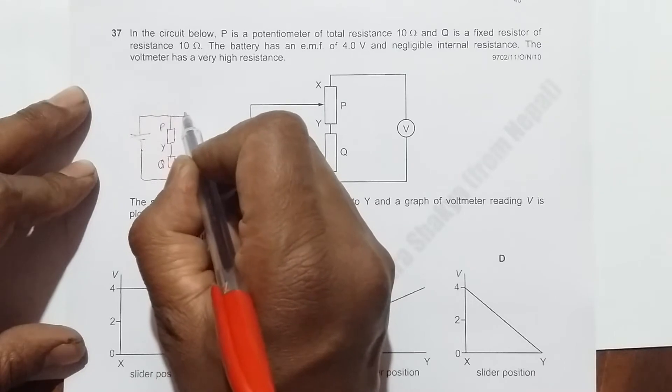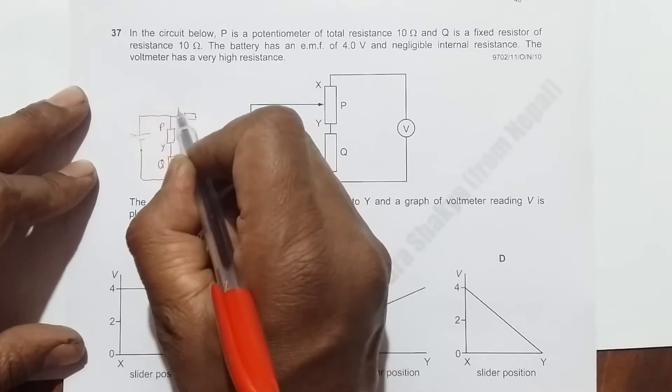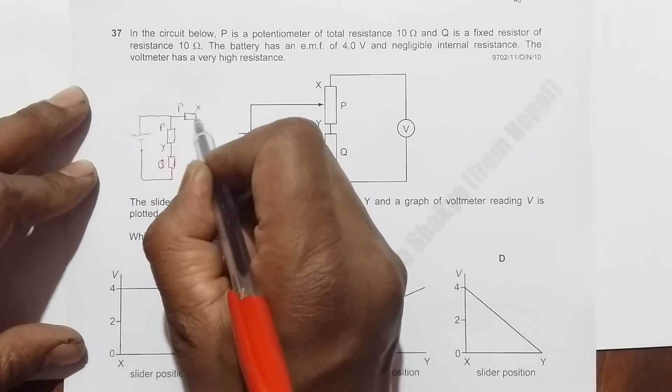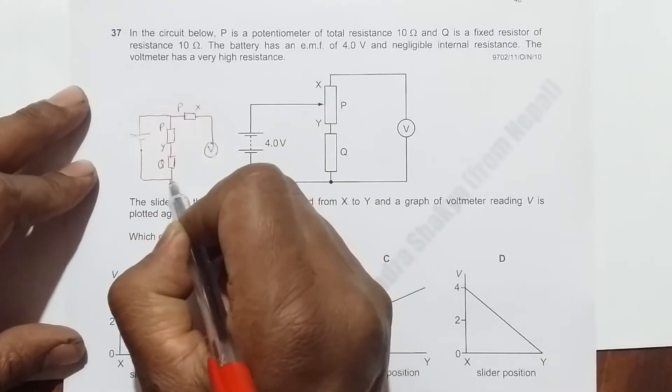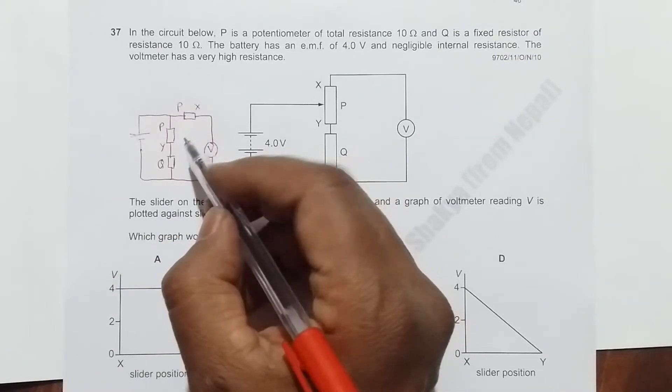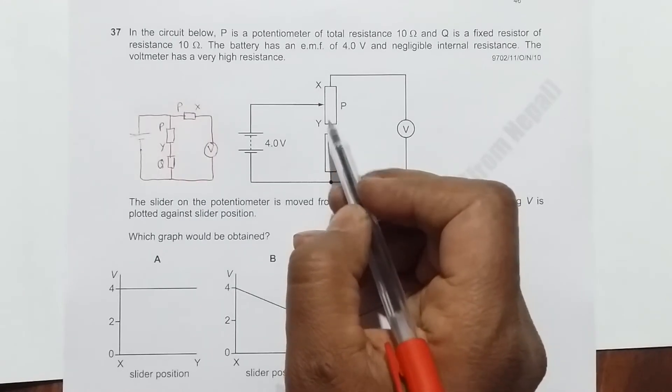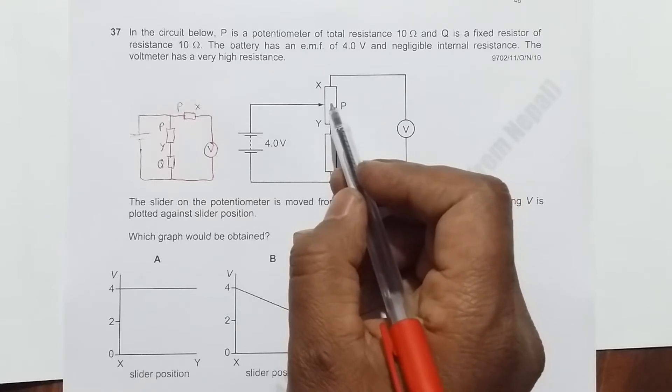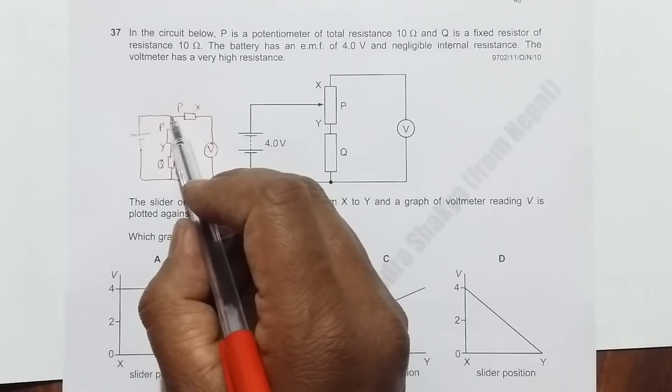From here starts the voltmeter V. We have broken the potentiometer into two parts: one is PY from here to here, and another is PX from here to here. This is point P.